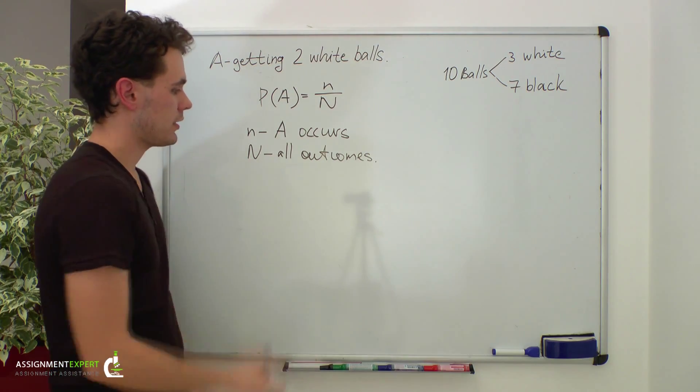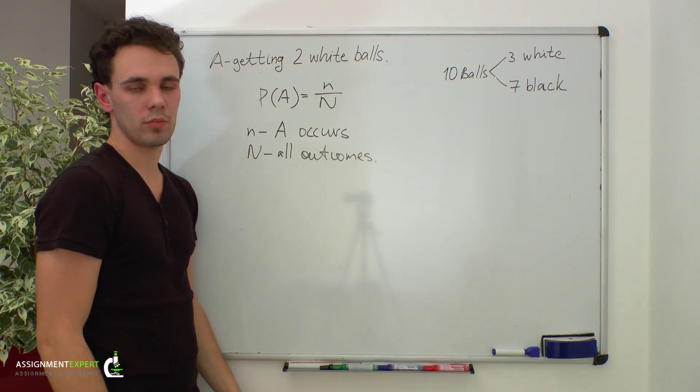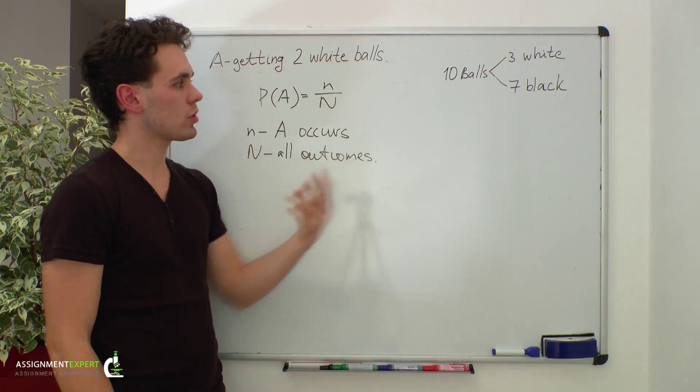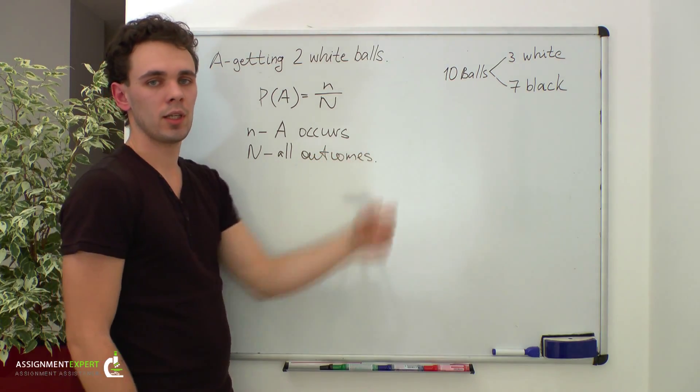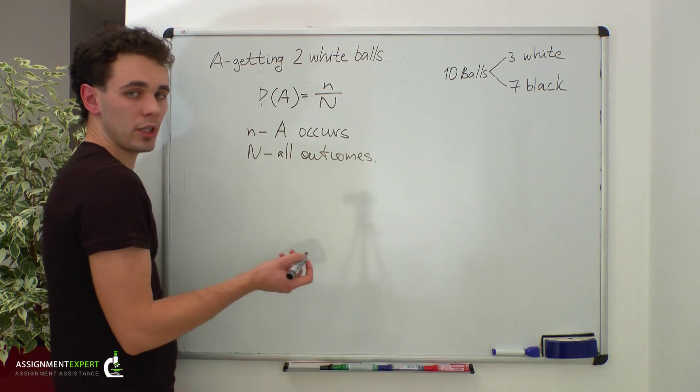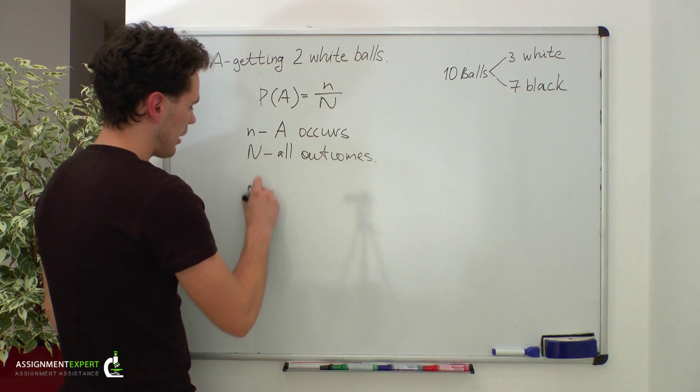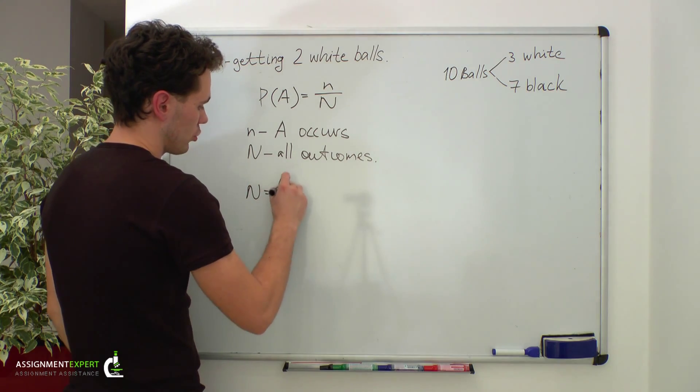Capital N, as we said, is the number of all possible outcomes. In our case, this is the number of ways in which we can pick two balls out of the total of ten. This equals the binomial coefficient, so capital N equals ten choose two.